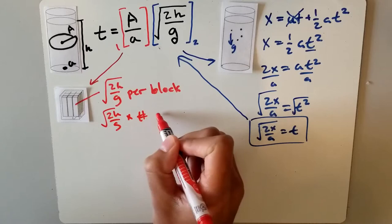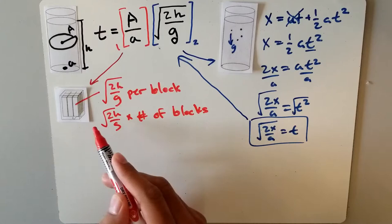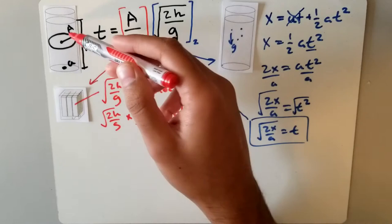Since a container like this isn't split into blocks, we need to know how many number of blocks would be in this. To do this, you just divide the area of the container by the area of the hole.